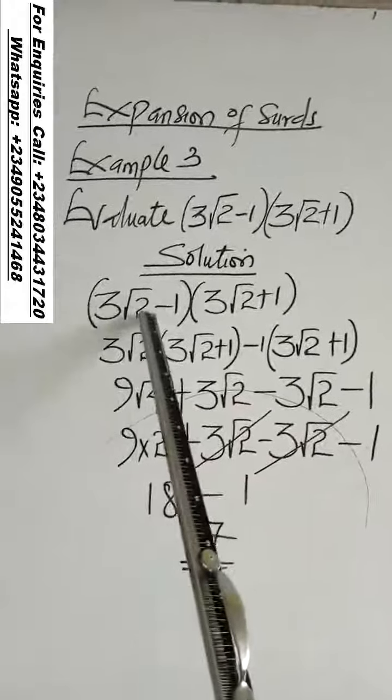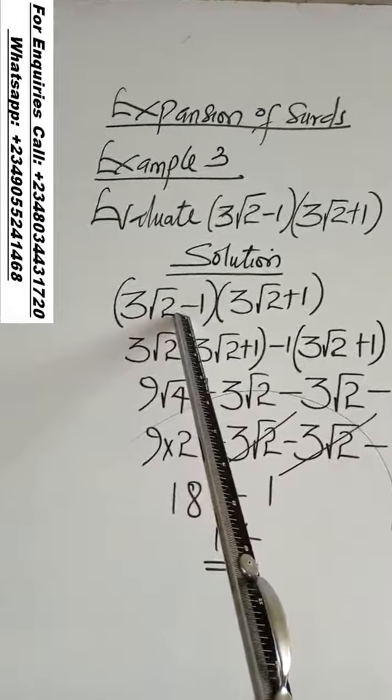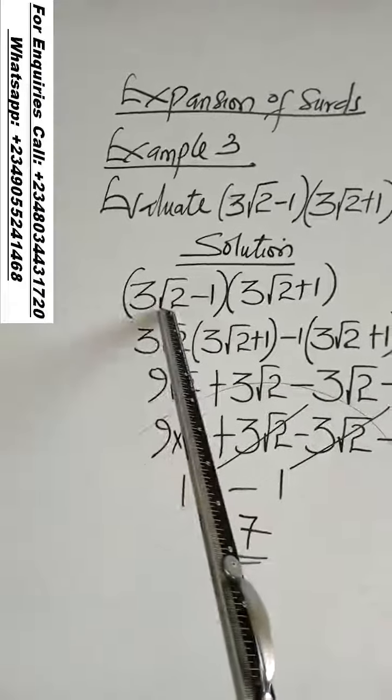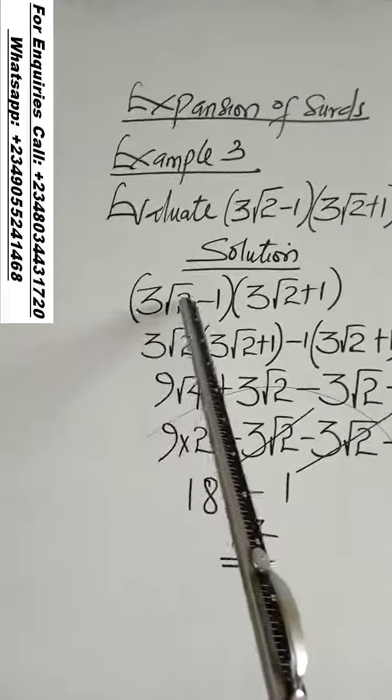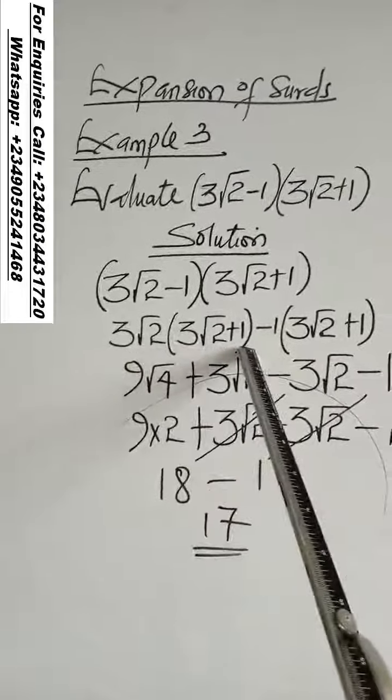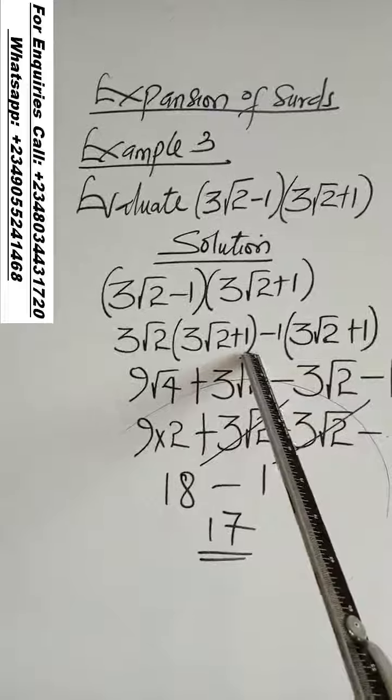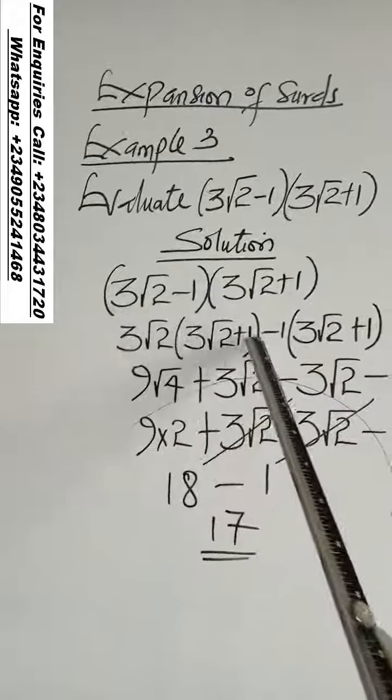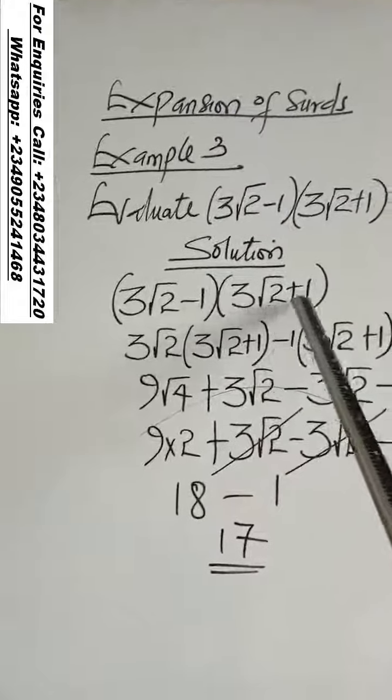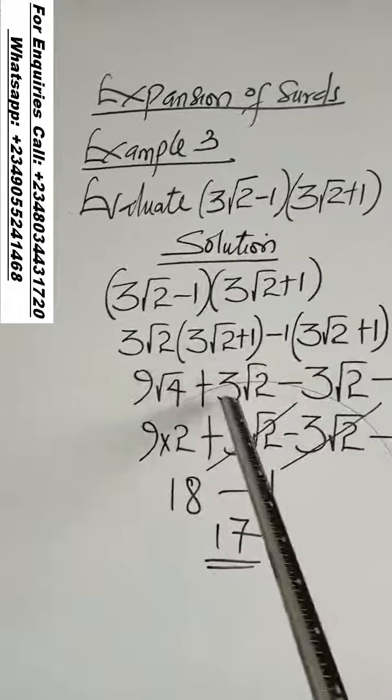In the first bracket, the content of the first bracket, the first one is 3√2. You use 3√2 to multiply everything in the second bracket. That is what you have here. The next thing is minus, you put it down, followed by 1, you put it down, multiply by everything in the second bracket.